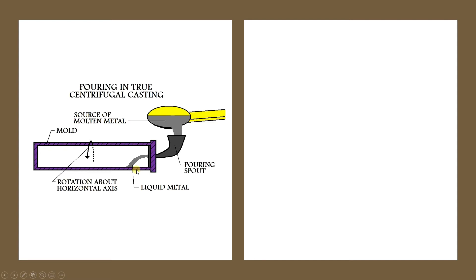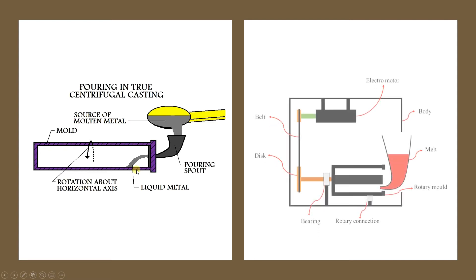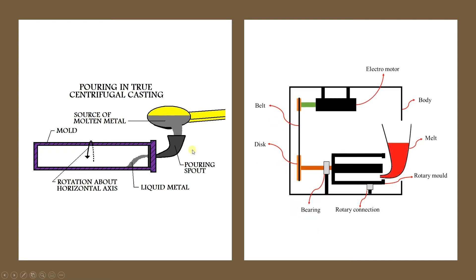Let's look at a more detailed diagram. We have an electrical motor coupled with a disc, and the disc is coupled with the mold. A bearing is used to provide support. Depending on the material and thickness required, we can control the motor speed. If the motor speed is low, we get a thicker section; if the motor speed is high, we get a thinner section.